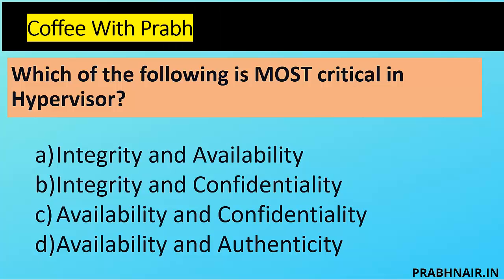The first coffee shot: which of the following is the most critical in a hypervisor? The keyword is 'hypervisor' — the base for hosting all virtual machines. The question asks which is most critical. Option A: integrity and availability. Option B: integrity and confidentiality. Option C: availability and confidentiality. Option D: availability and authenticity.